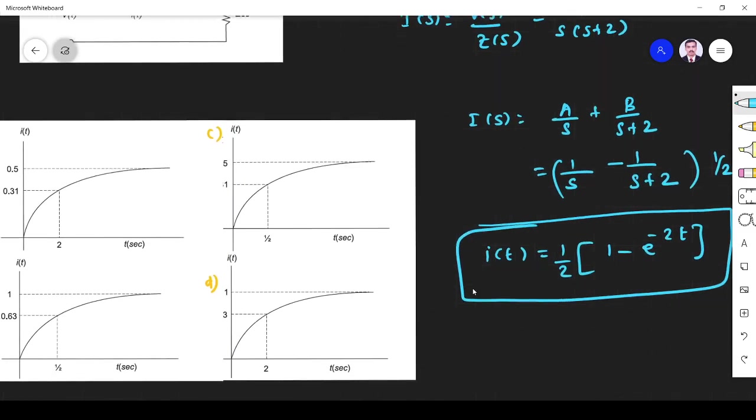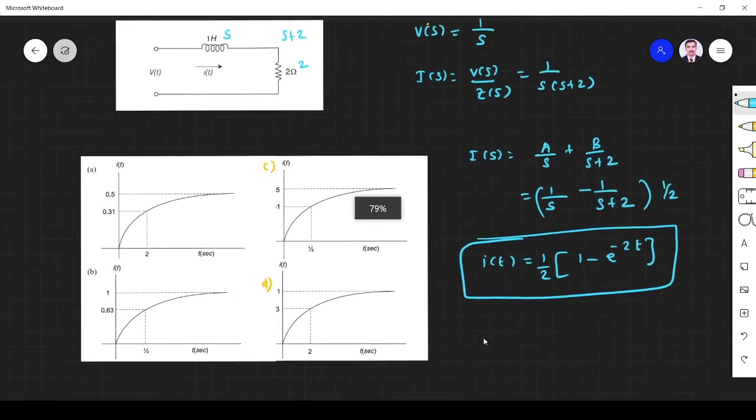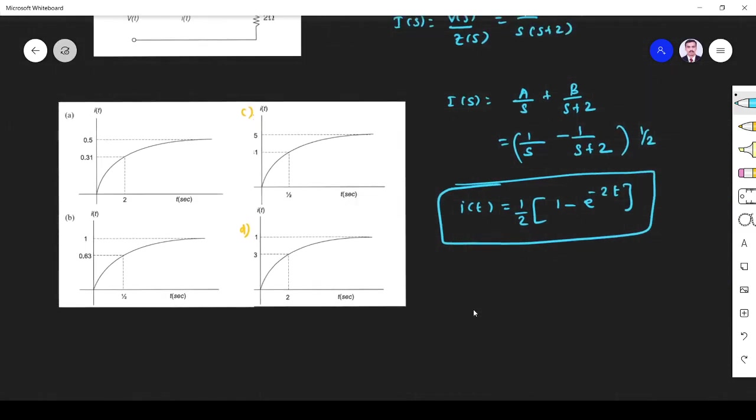So which plot fits for this graph? Let us see. So what they have given? I(0) they have given. So I(0), let us see. If I substitute t equals 0, it will become 0.5. So when I(0) it is 0.5. So option B and D are wrong. It is also 0.5, it is also 0.5.